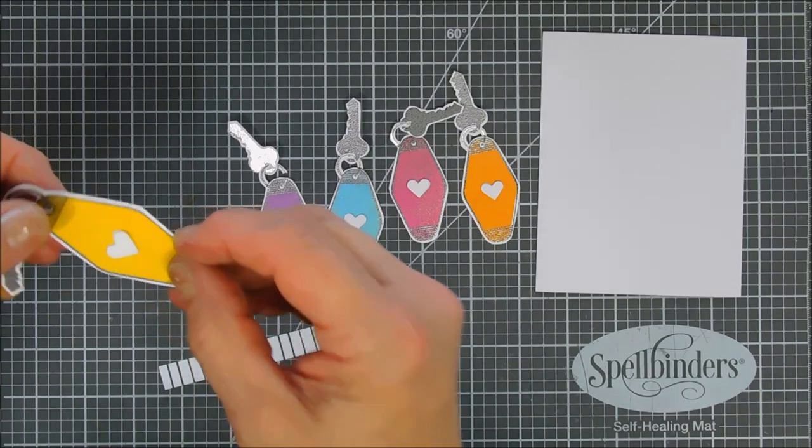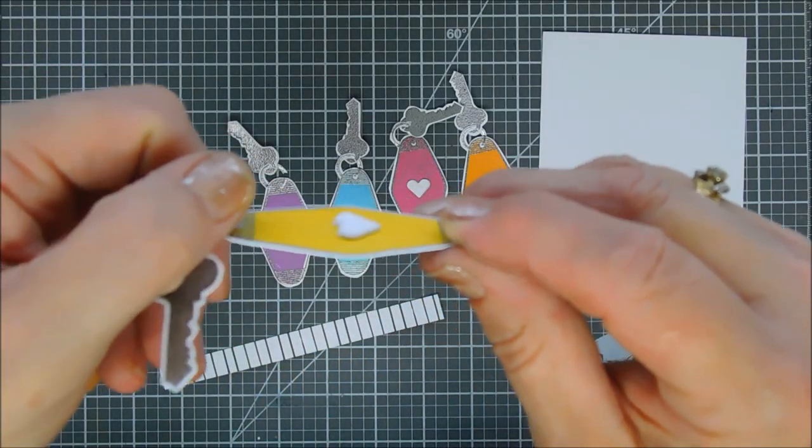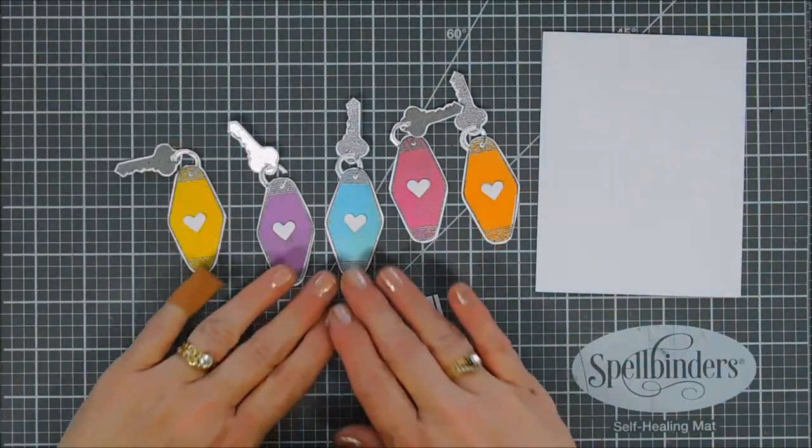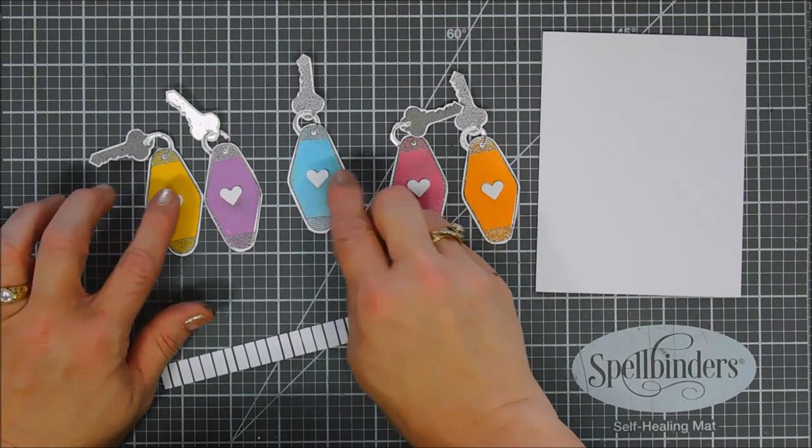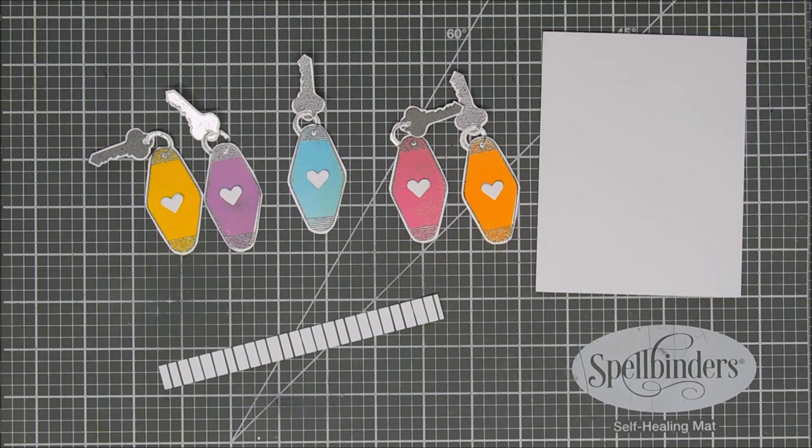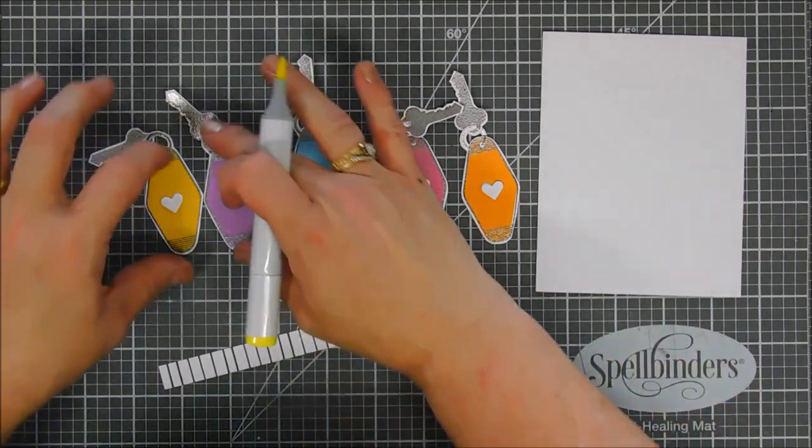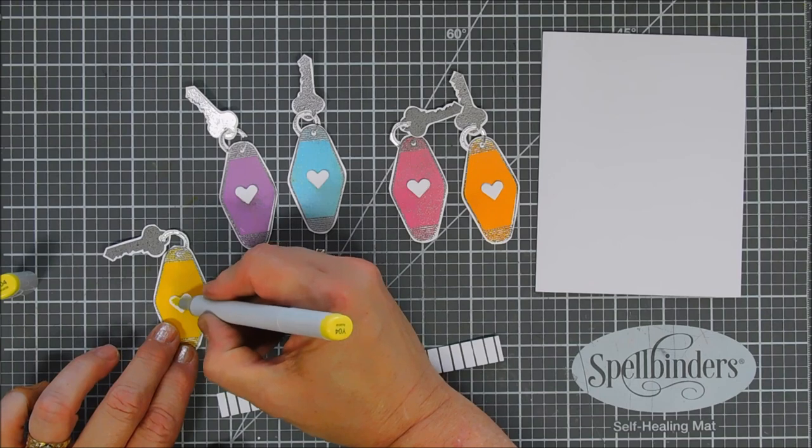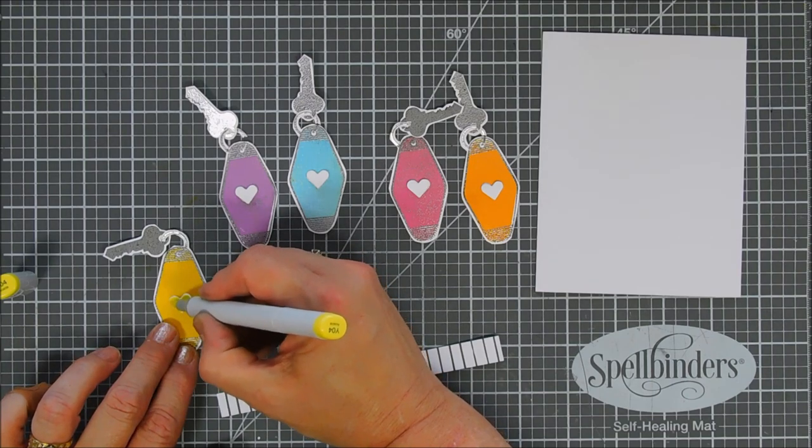We have layers on our hearts and I like the dimension that it adds and we have a half inch strip of the striped paper. Now we're going to bring in some foam adhesive and we're kind of going to arrange our keys directly on our card base. My card base today is a standard A2 size card base which is four and a quarter by five and a half inches.